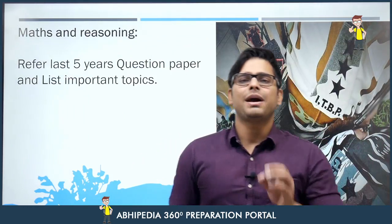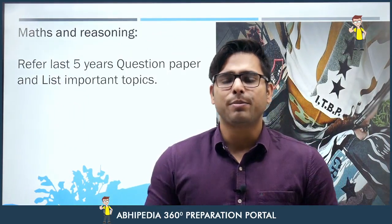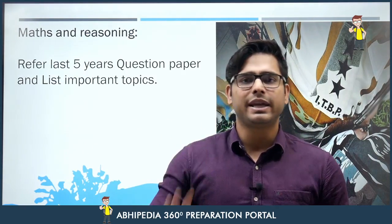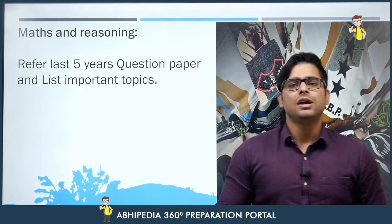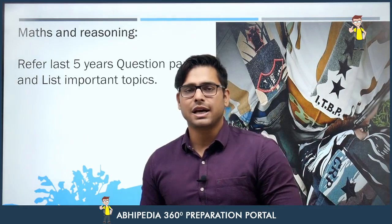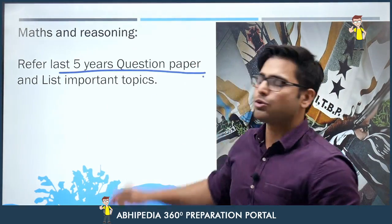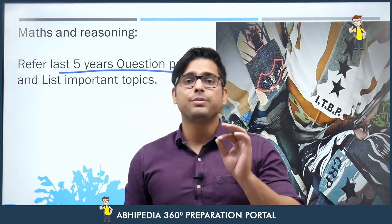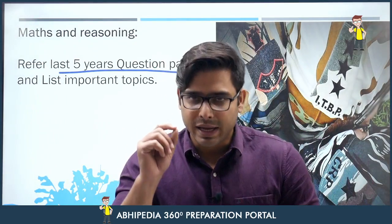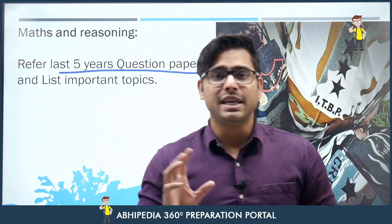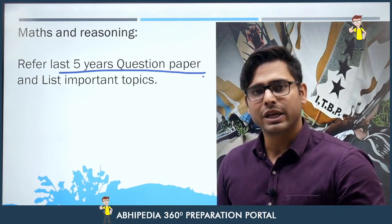For maths and reasoning: if someone has done CSAT and had no problem with it, maths and reasoning will be a cakewalk. If you find maths and reasoning slightly difficult, solve the last five years' question papers of CAPF Paper 1. Look at the questions — the ones you can solve easily, solve them. This gives you a realistic sense of the question paper.